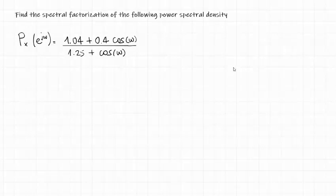In this pencast, we show how to solve an exercise where we are given the power spectral density of a random signal x and we are asked to find its spectral factorization.